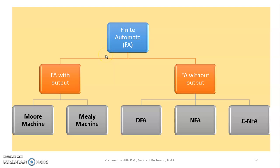Good morning students. In our class, we will have a formal definition of finite automata. We will have five tuples to define the finite automata. We will divide the finite automata into two main categories: finite automata with output, and finite automata without output.